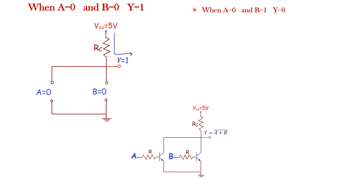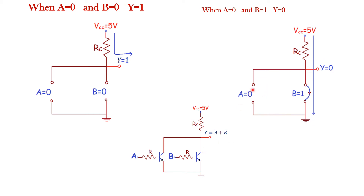Next condition: when A equals 0 and B equals 1. The first transistor is not conducting and acts as an open switch. The second transistor, with B equals 1, is conducting and acts as a closed switch. In the equivalent circuit, VCC is directly connected to ground through the closed switch, so current flows from VCC to ground. There is no output voltage because the output is short-circuited. Therefore, Y equals 0.